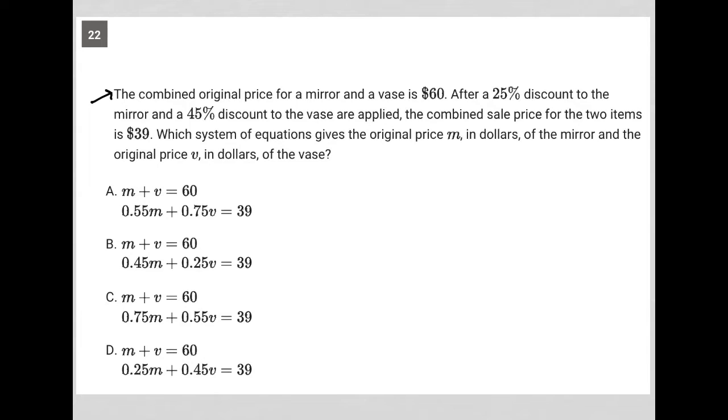This question says the combined original price for a mirror and a vase is $60. So M for mirror plus V for vase is equal to $60.